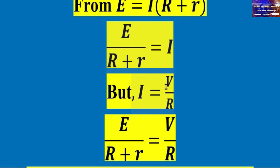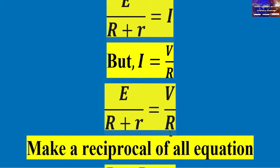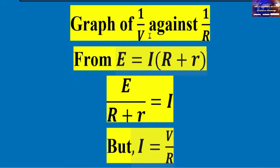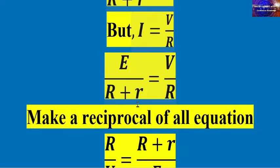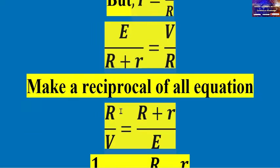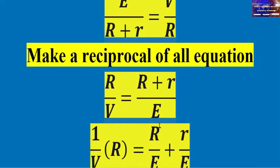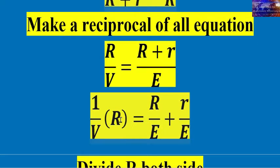Since current equals V over R, we substitute V over R for current. So V over R equals EMF over (R plus r), where r is the internal resistance. To get 1 over V, take the reciprocal: R over V equals (R plus r) over EMF.